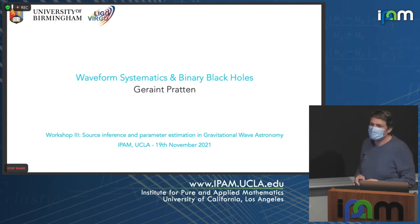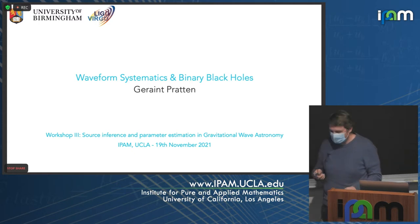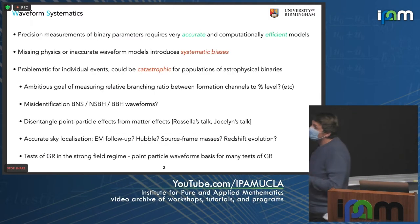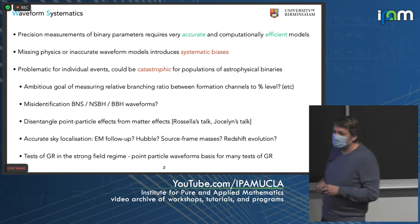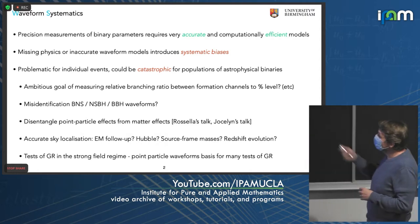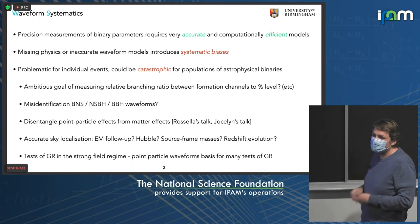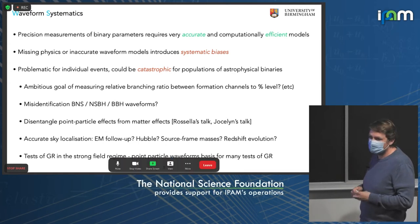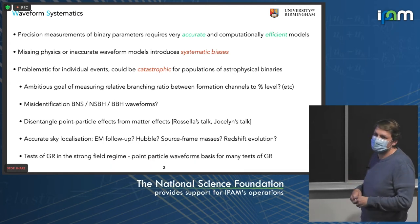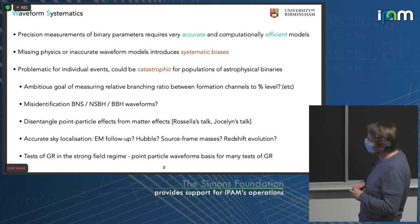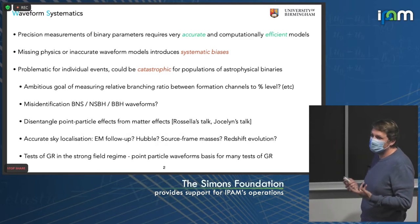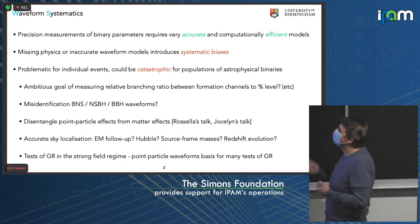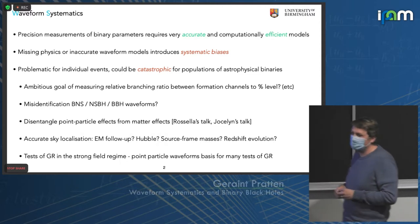Recent LIGO papers are really the first time we started to do this on a large scale. Precision measurements of binary parameters really requires exquisitely accurate waveform models that are computationally efficient. We're now reaching the point where we have tens or hundreds of binary black holes that we want to analyze, especially if we want to consider sub-threshold triggers as well. So this computational efficiency is important — you need to get as much physical information into your waveform models in a nice compact form.